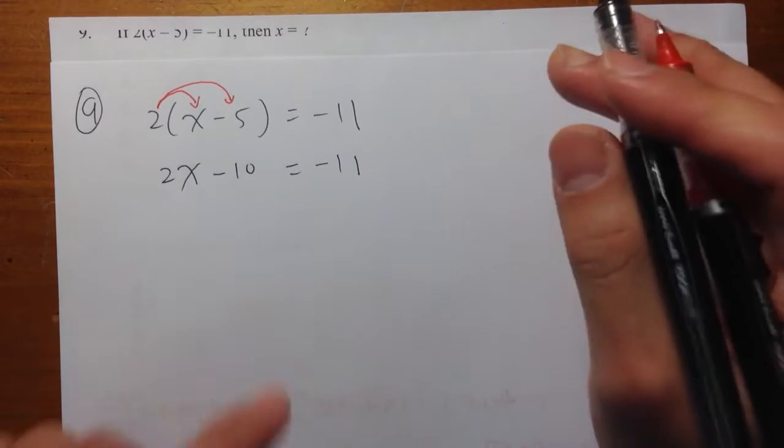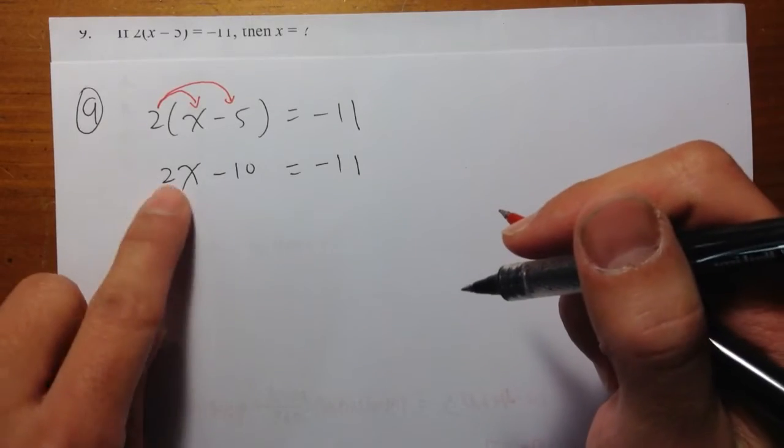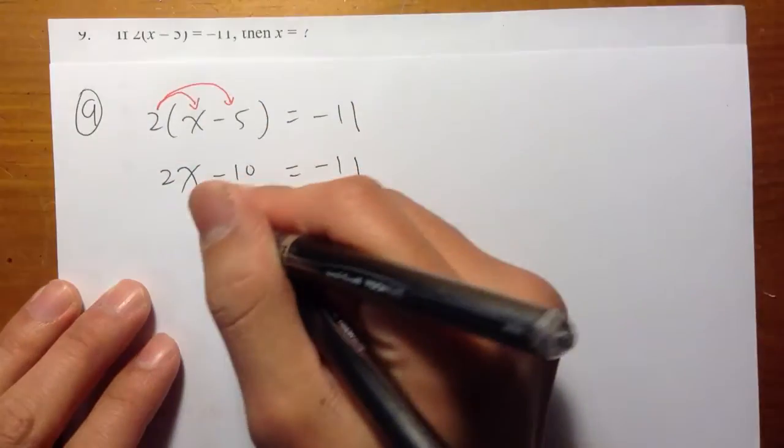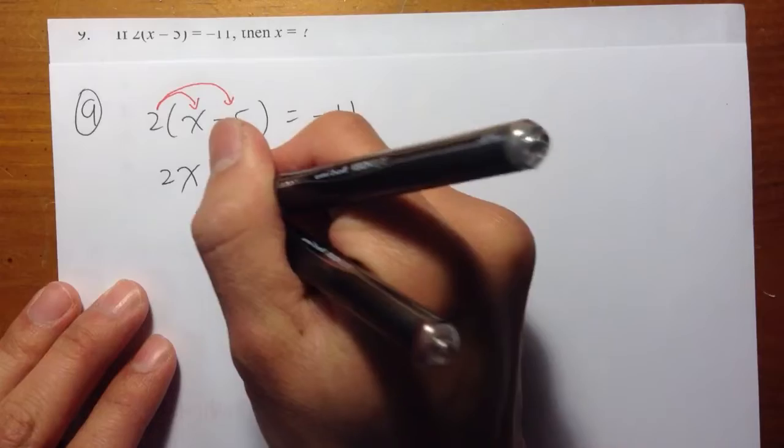And then we are going to work with the number first, the number that has no x. So I want to leave the 2x right here by itself. That's my goal. So since I have a minus 10, I'm going to do the opposite of the minus 10, which is add a 10.